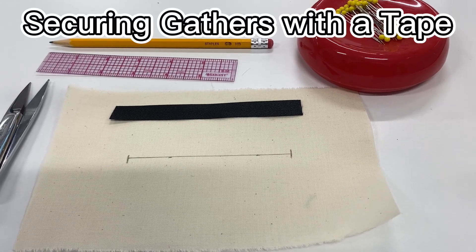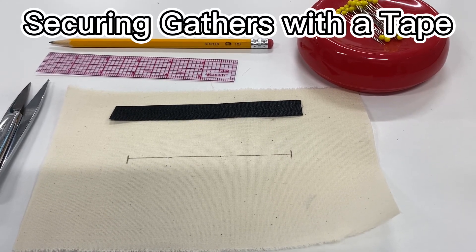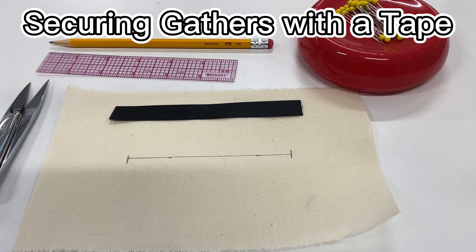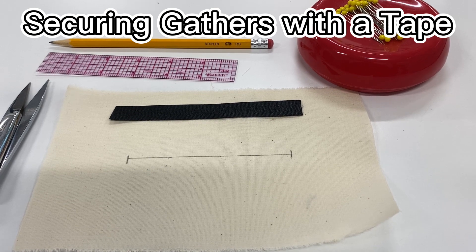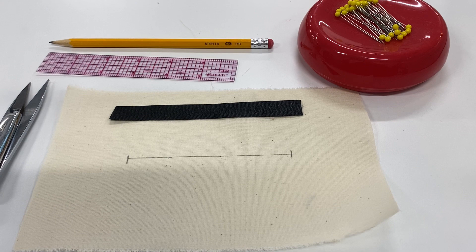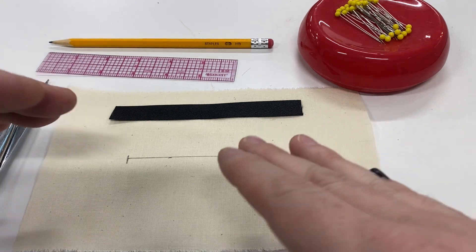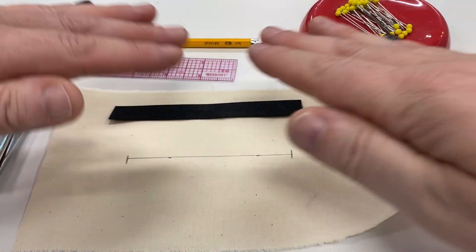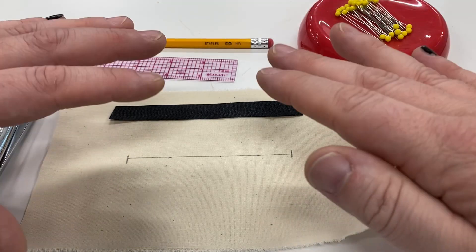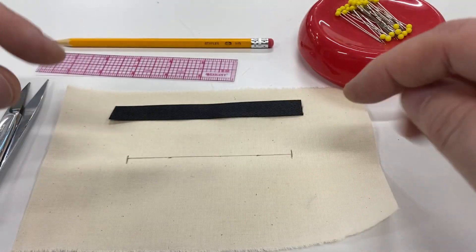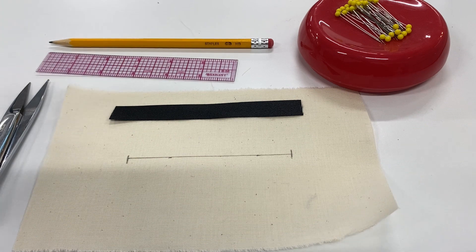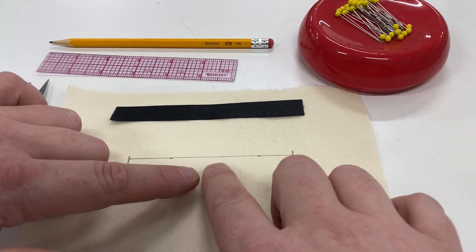All right class, this video is going to combine the techniques we just discussed: gathering and sewing a taped seam. What we are doing is creating gathers in the middle of a piece of fabric, not on a seam, and using a piece of tape to hold those gathers in place.